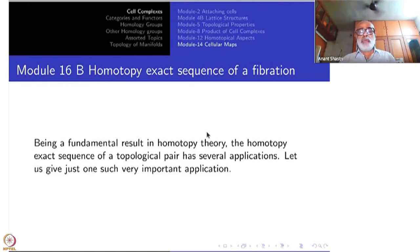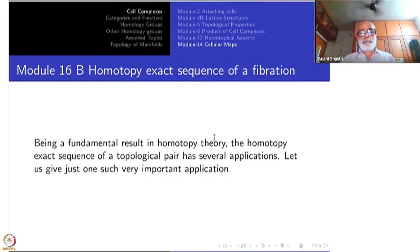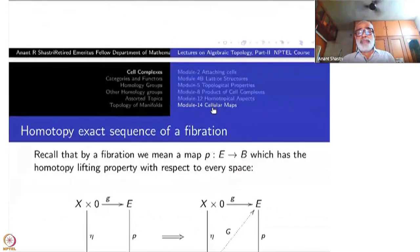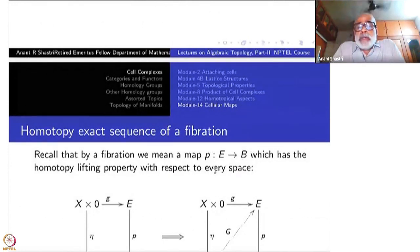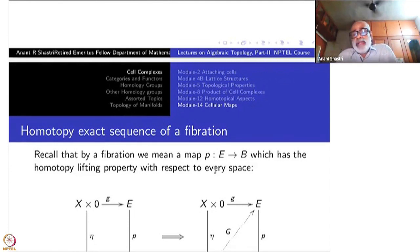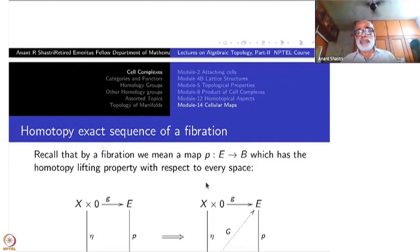Today we shall give one very important application of that, namely the homotopy exact sequence of a fibration. Recall that by fibration we mean a map between topological spaces — it is customary to denote such a map by p from E to B — where E is the total space and B is the base space, which has the homotopy lifting property with respect to every space.